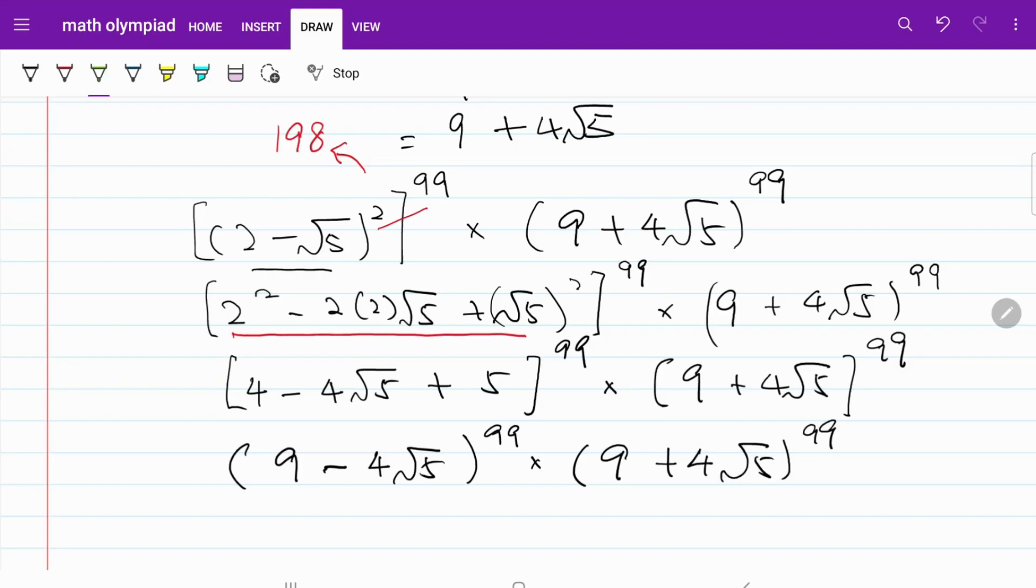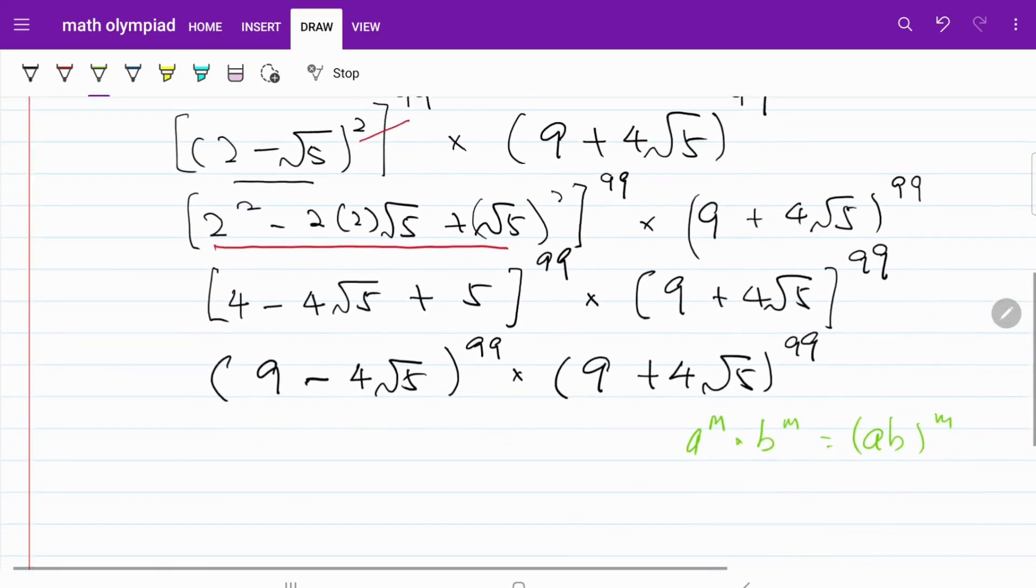Remember the rules of indices states A to the power of M multiplied by B to the power of M is equal to AB to the power of M. Let's go ahead and make use of this. So what I have now is 9 minus 4 square root of 5 multiplied by 9 plus 4 square root of 5 to the power of 99.